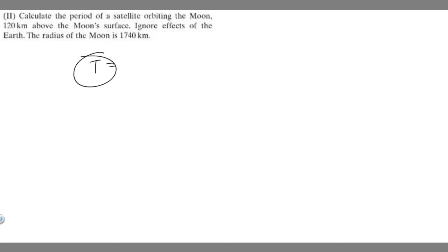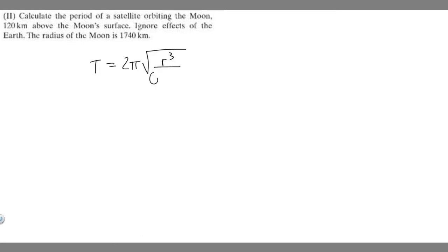The formula for the period is: T equals 2π multiplied by the square root of the radius cubed — or the distance, I'll show you what it means in a second — divided by the gravitational constant times the mass of the moon. So I'm just going to call it M, the mass of the moon.